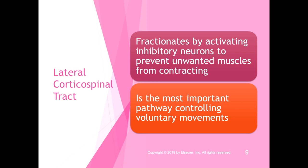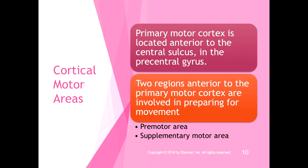The medial spinal tracts handle postural and unconscious movements happening without deliberate thought, while the lateral corticospinal tract controls voluntary movements and prevents unwanted movements. The primary motor cortex is located anterior to the central sulcus in the precentral gyrus; the primary sensory cortex is just posterior to the central sulcus, so they're neighbors. Just like the primary sensory cortex, the primary motor cortex is arranged somatotopically. Two regions anterior to the primary motor cortex — the pre-motor area and the supplementary motor area — are involved in preparing for movement.